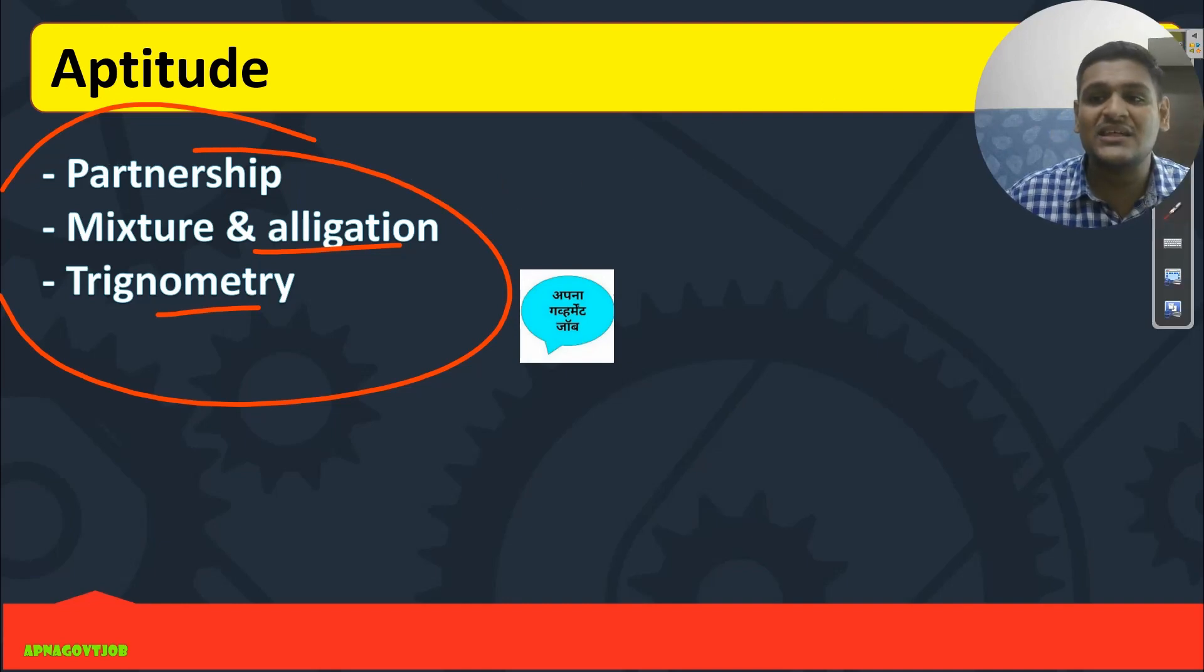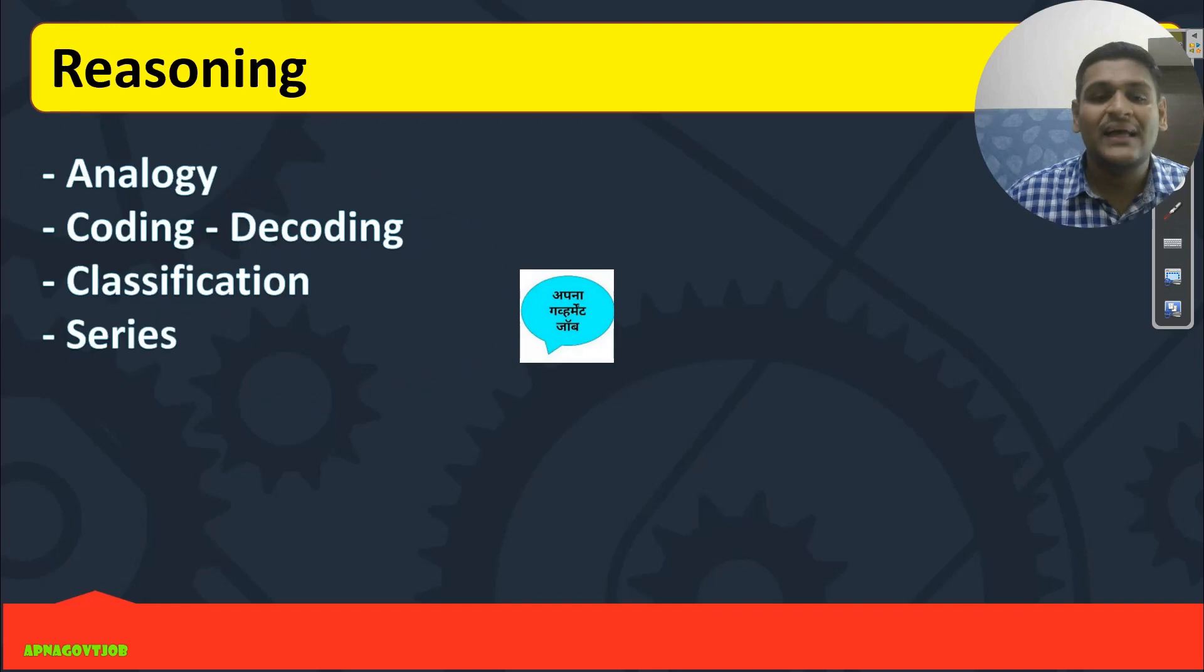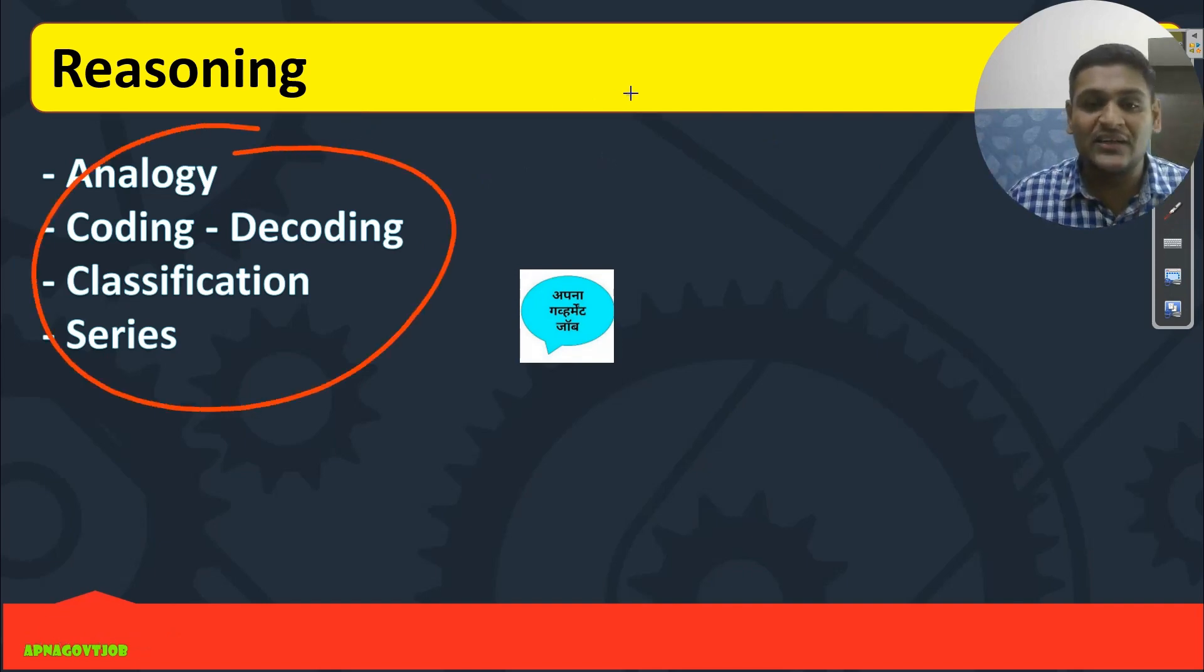Second part is your Reasoning, in which we are taking Analogy, Coding-Decoding, Classification, Series. Now basically for this, QBox is enough, but you can combine your QBox with your daily Telegram PDF also because some logics you will get in PDF, some logic you are getting in QBox.